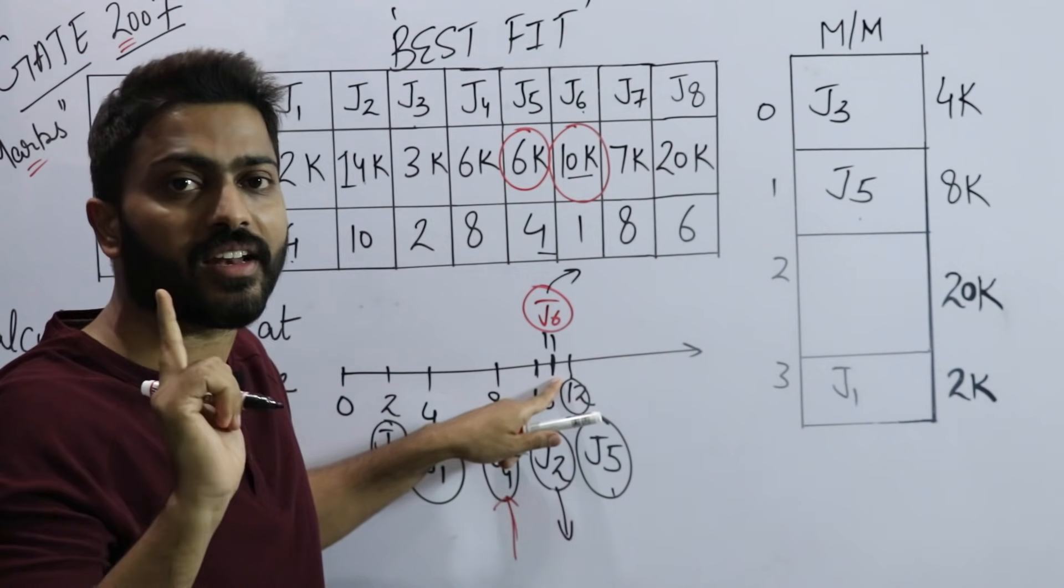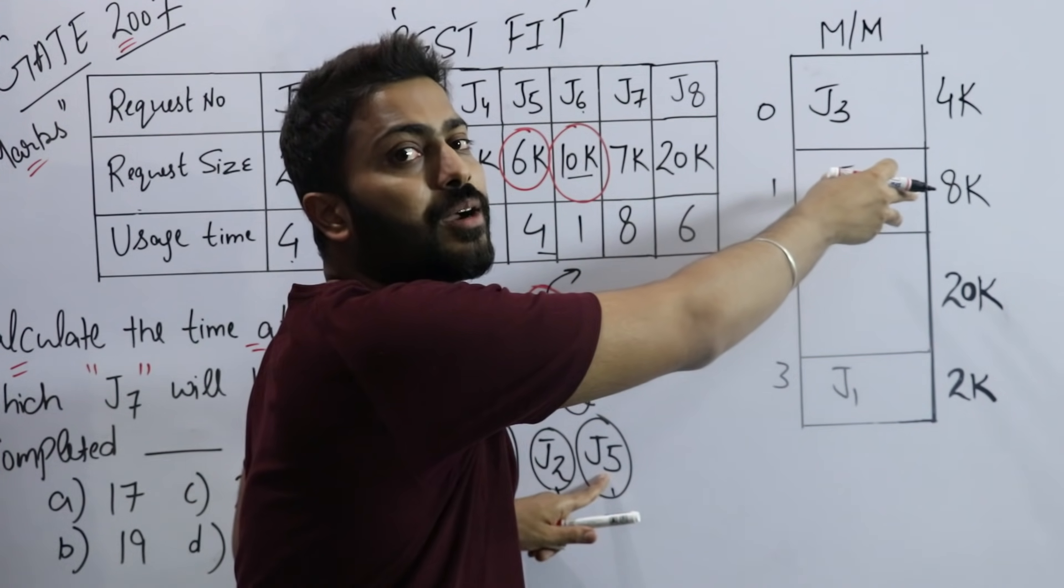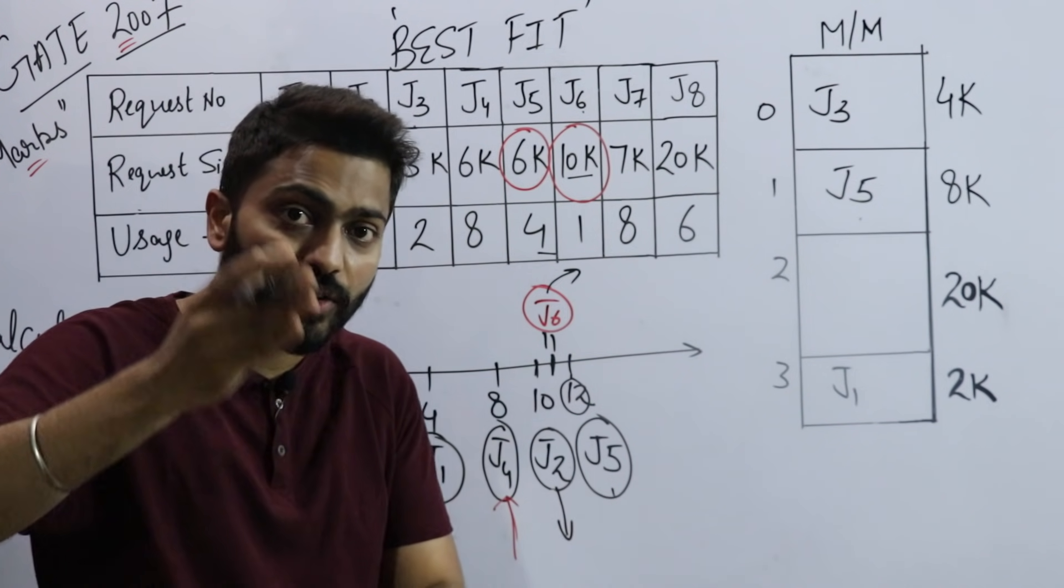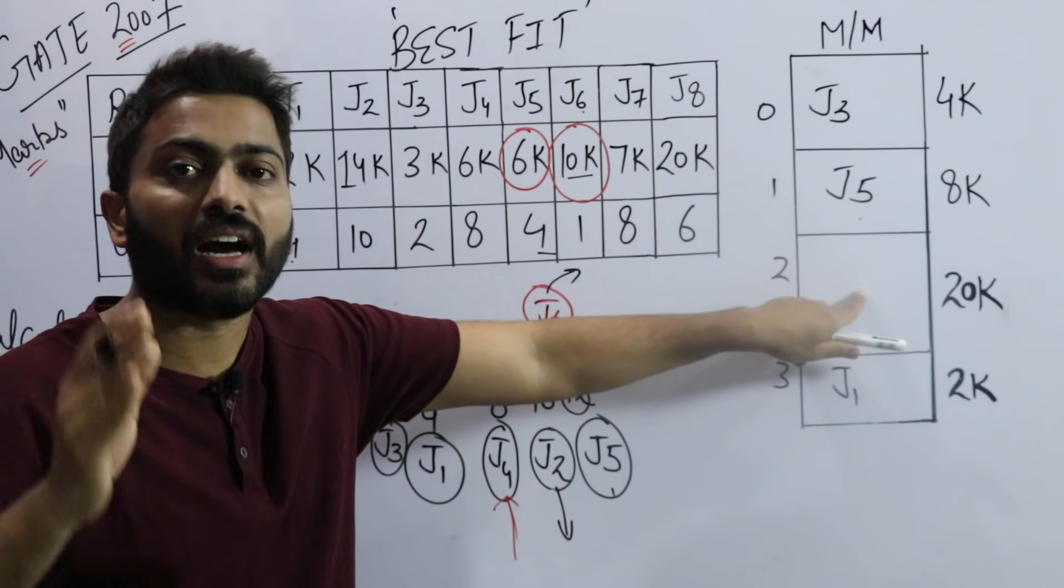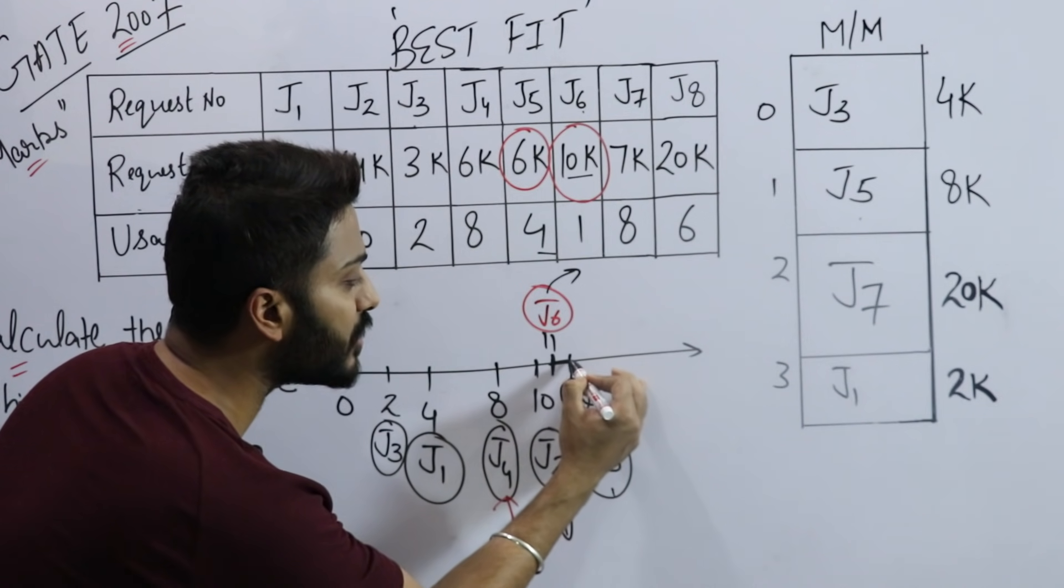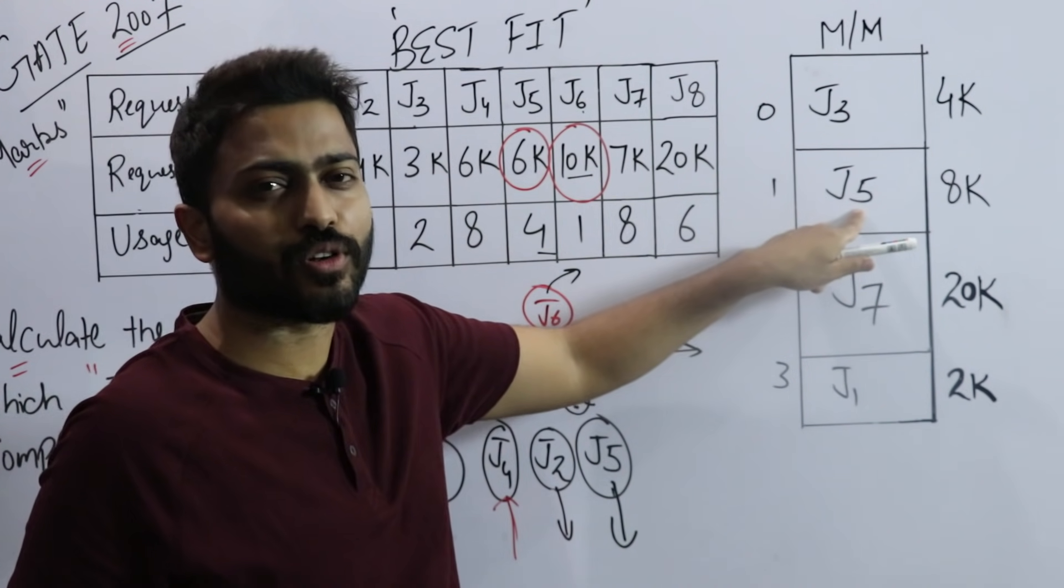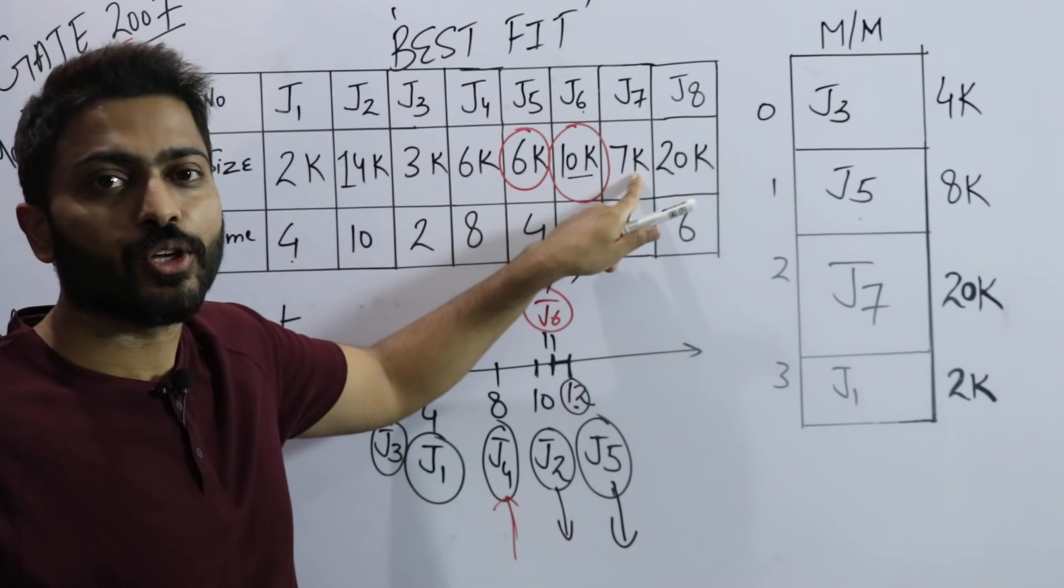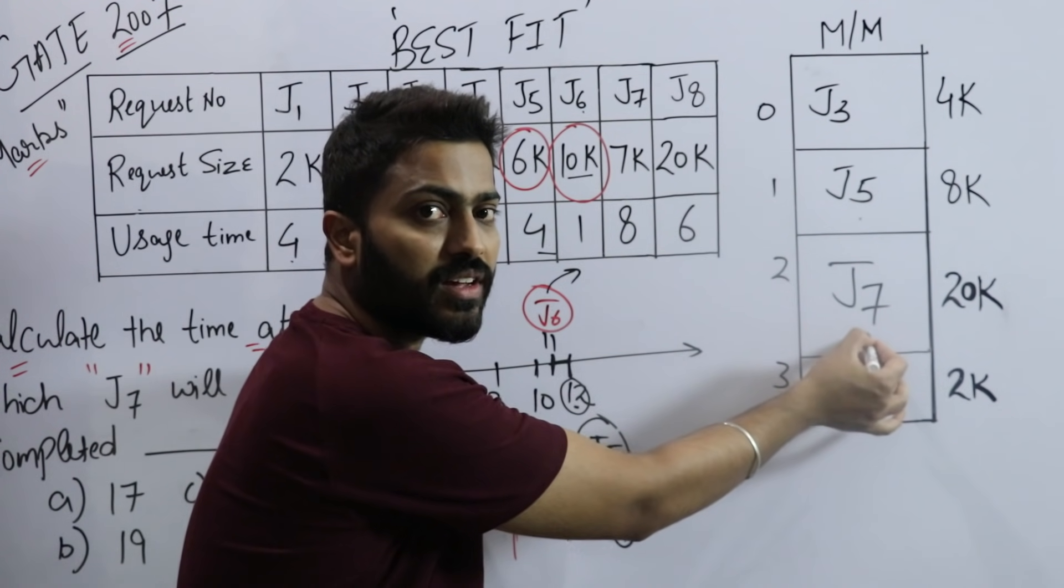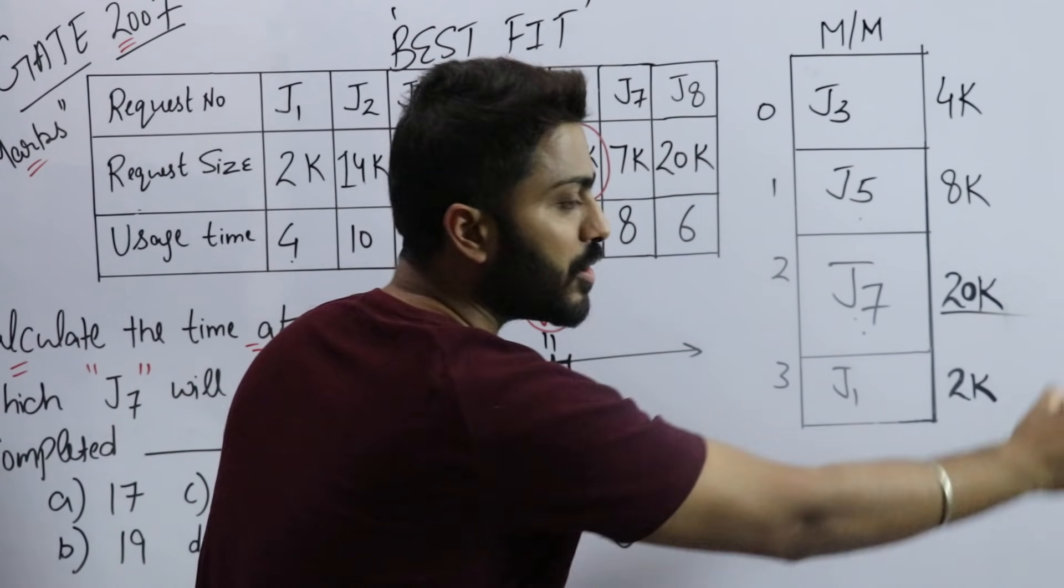But pay attention - at time 11, J6 will exit. Look here, obviously 11 comes before 12, so when time 11 comes, J6, which is sitting in this slot, will exit. Let's suppose when time 11 is reached, J6 exited. At this point in time, this slot became free. At this point, whether it's best fit or any fit, you don't have to wait thinking 'I'll wait 1 more second until time 12.'